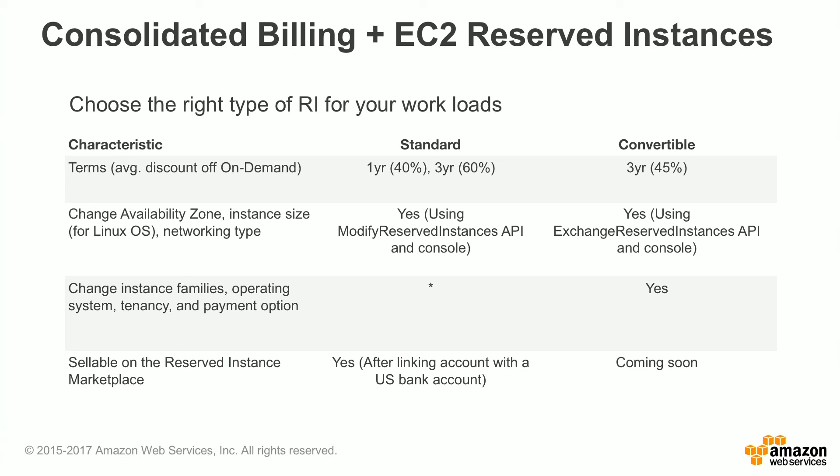In terms of changing instance families, operating systems, tenancy, and payment options, you can do all of those on convertible RIs. On standard RIs, there is something called instance flexibility — so within the same instance family, if you have an RI that is unutilized, for example if you have an M4 xLarge RI but you've got two M4 Large instances running, the new EC2 instance flexibility option will automatically apply your M4 xLarge RI as two M4 Large RIs in that scenario. However, you still can't change instance families and several other things on standard RIs.